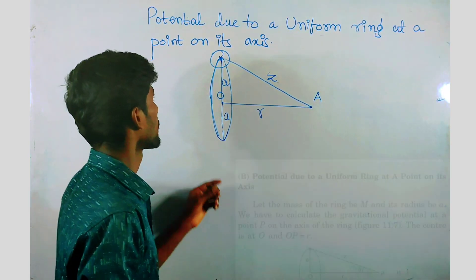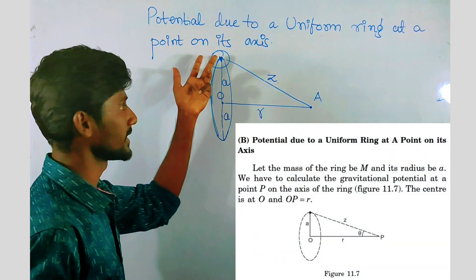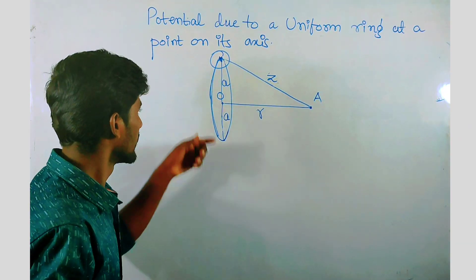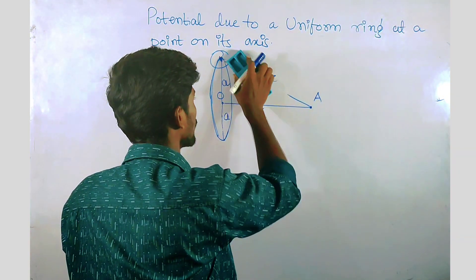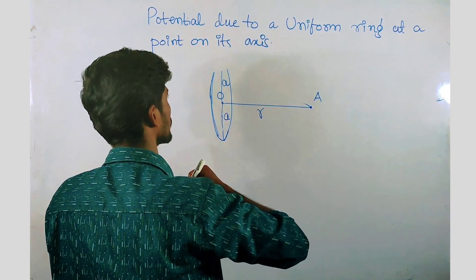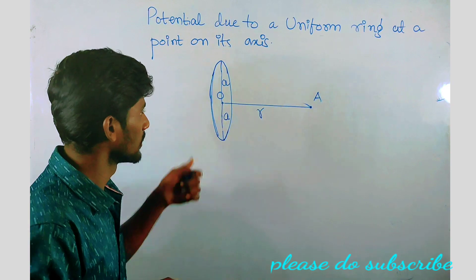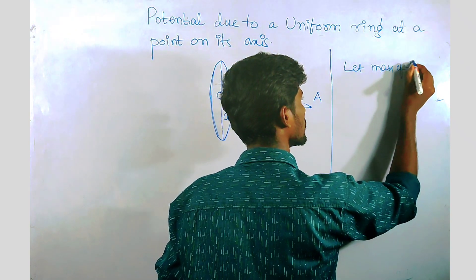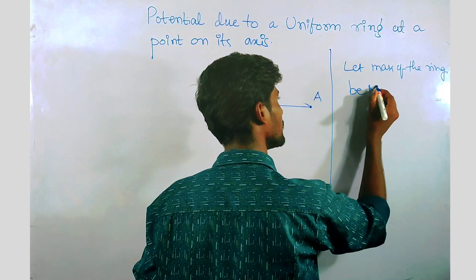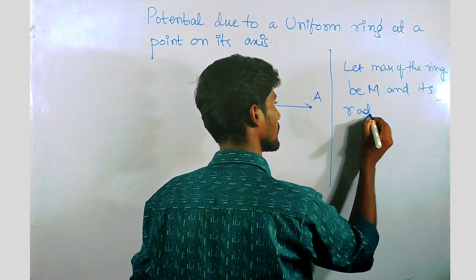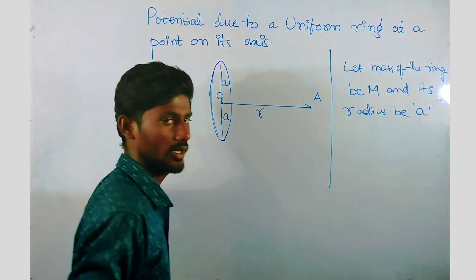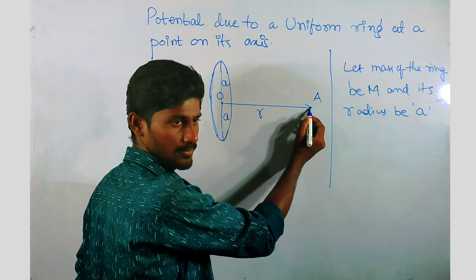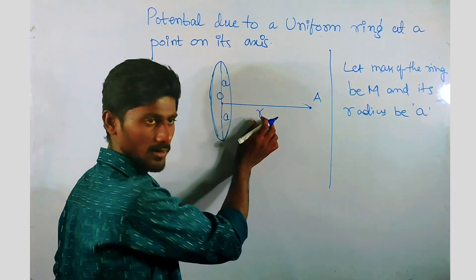The problem statement is: potential due to a uniform ring at a point on its axis. Here is the ring that I have drawn. Let the mass of this ring be capital M and its radius be small a. Point A is on its axis at a distance of R from the center of the ring, O.